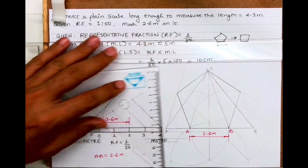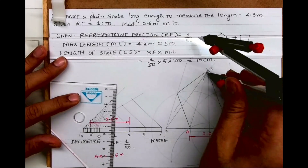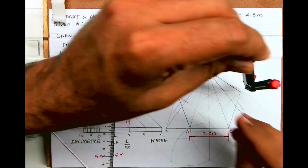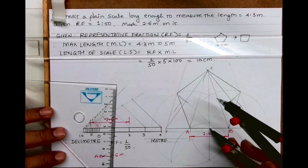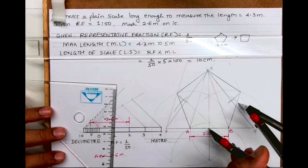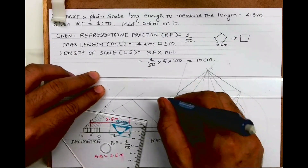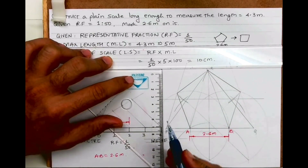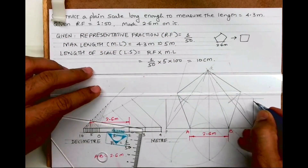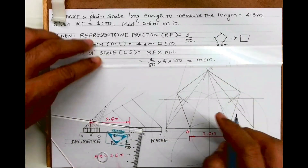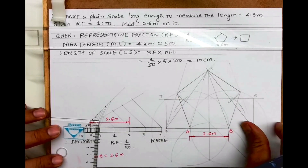Now I will convert the triangle into a rectangle. I divide the vertical line into two parts and take half the height. When you do that, you get rectangle PQST instead of triangle PQR.